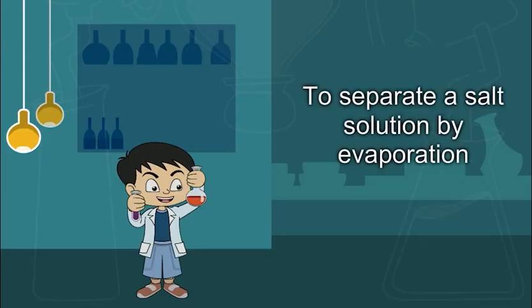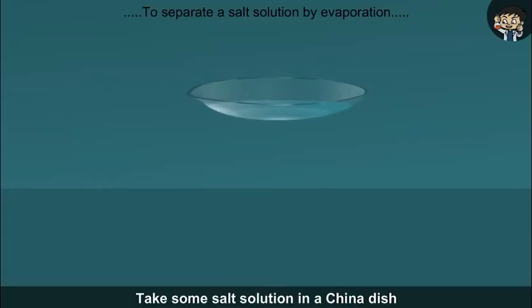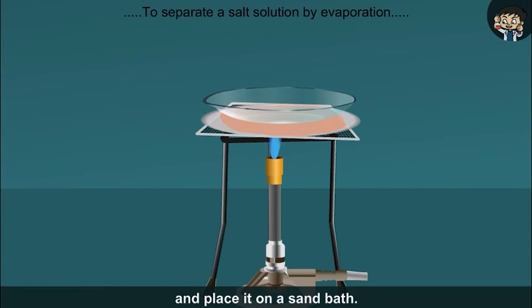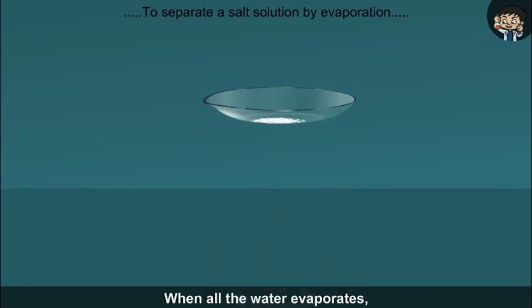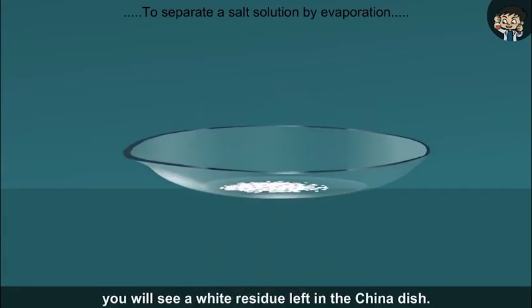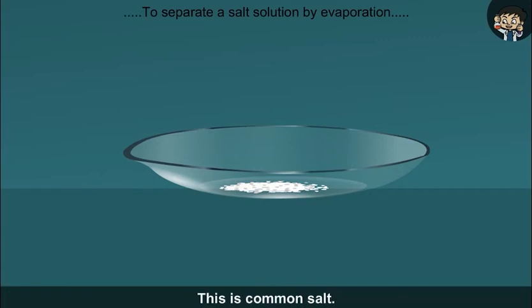To separate a salt solution by evaporation. Take some salt solution in a china dish and place it on a sand bath. On heating, the water changes into vapor. When all the water evaporates, you will see a white residue left in the china dish. This is common salt.